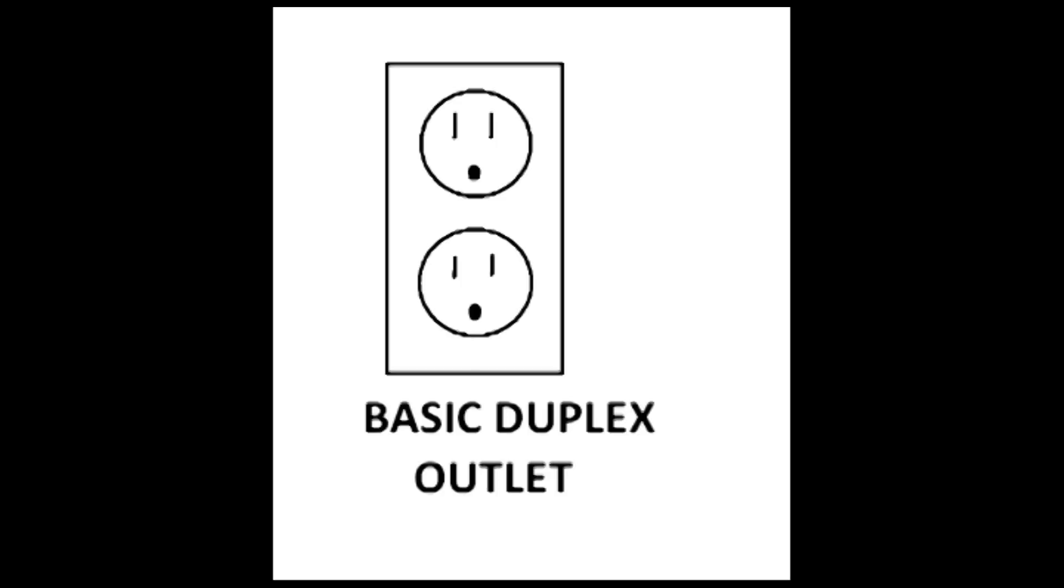Now there are variations to this symbol and all have different meanings, but they're just not used. Instead, these common abbreviations or words are used. WP or weatherproof—that denotes a weatherproof cover goes on that outlet. GFI—that's a GFI protected outlet and is usually found in a bathroom, kitchen, or outside.